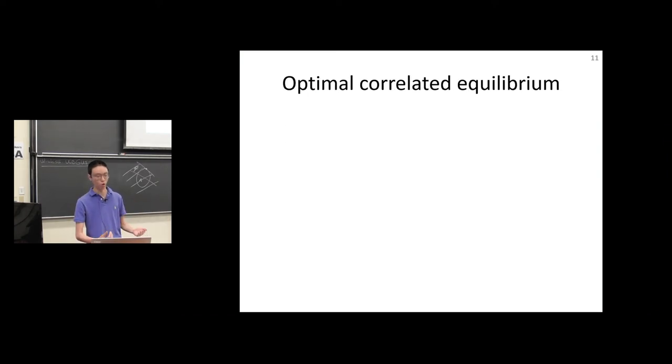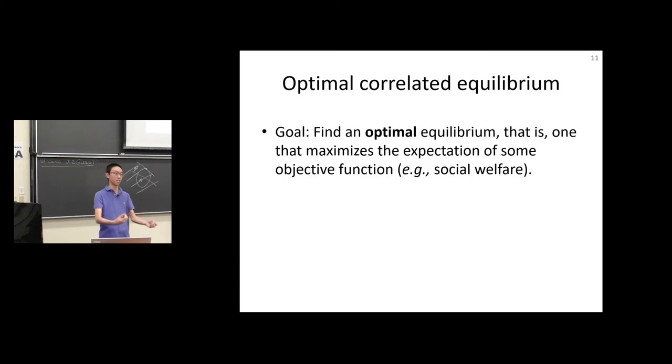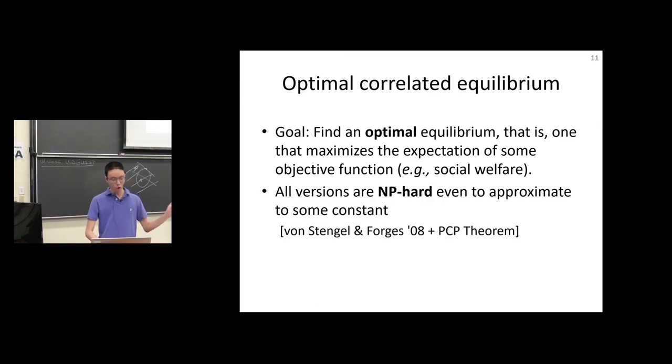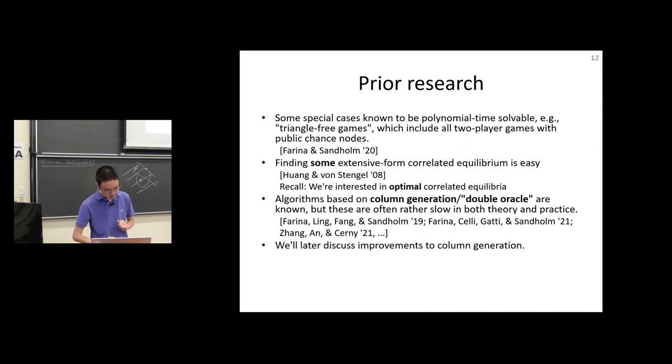In this talk, I'll be interested in optimal correlated equilibrium. What's an optimal correlated equilibrium? It's simply one that maximizes a certain objective function in expectation. For example, you can think of social welfare maximization. Our paper is general to any objective function, but social welfare already encapsulates all the difficulty. Under all three of these notions, computing an optimal correlated equilibrium or computing the value is NP-hard, even to approximate to some additive constant. This is due to von Stengel and Forges with the PCP theorem on top.